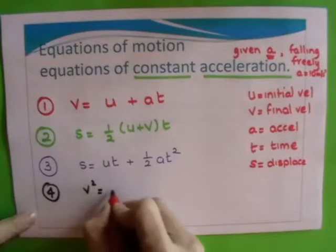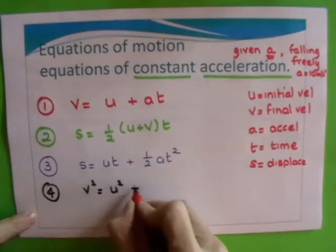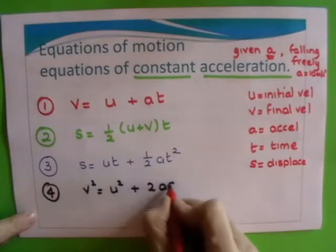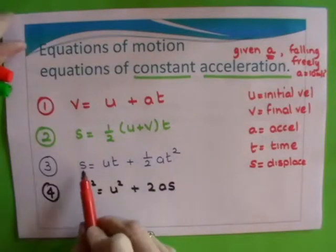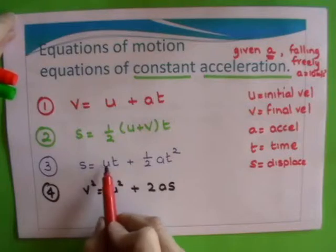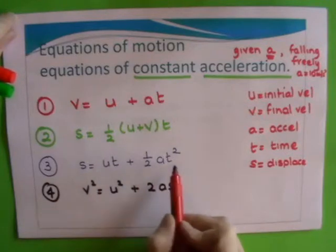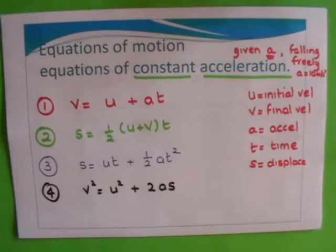And the fourth equation is v squared equals u squared plus 2as. Now the one in maths that's sometimes written differently is this one. You can write it as s equals vt minus a half at squared if you're given a final velocity.